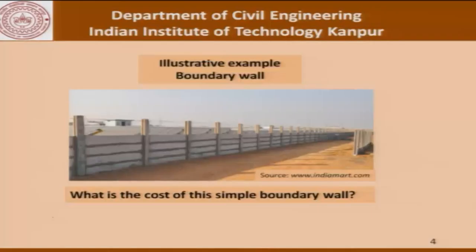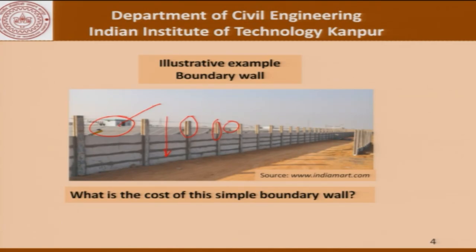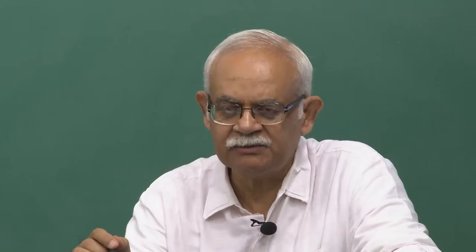If you look at this boundary wall, the components include piers or pillars, and a wall in between these pillars. There are barbed wires running through the pillars above a certain height — from ground level up to a certain level we have the wall, and above that the barbed wires run at a certain distance. We must also imagine there is a foundation dug below the ground.